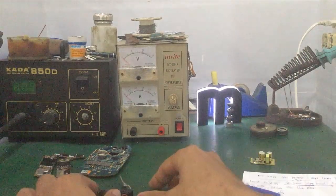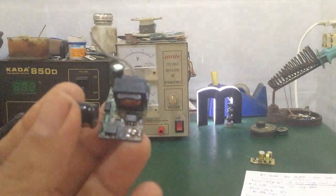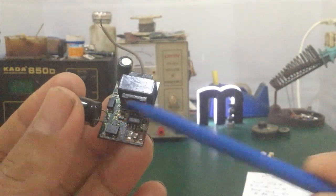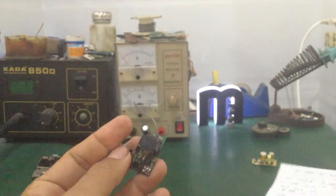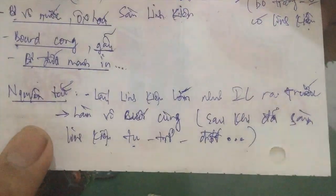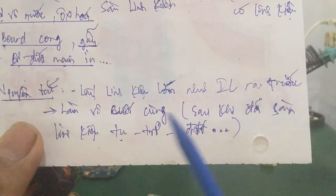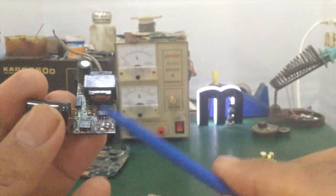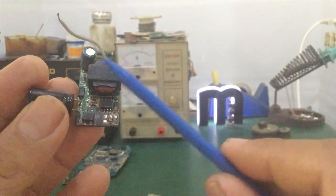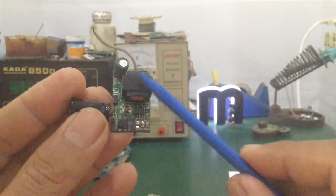In this case, the wire coil (cụm dây) is the largest component and will be in the way. So I will remove the wire coil first. Following the rule: remove the large, obstructing components first. After transferring the capacitors, resistors, and diodes, I will solder the wire coil back on last.